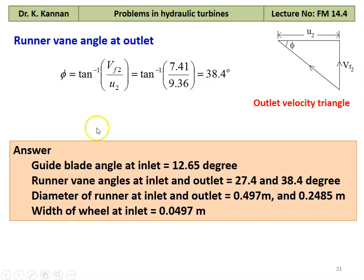The answer to the problem: guide vane angle at the inlet 12.65 degrees, runner vane angle at the inlet 27.4 degrees and at the outlet 38.4 degrees, diameter of the runner at the inlet 0.497 meter and at the outlet 0.2485 meter, width of the wheel at the inlet 0.0497 meter.